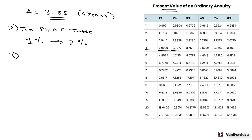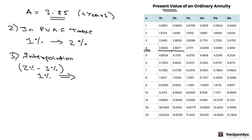The third step is to use interpolation. For interpolation, the difference in the discount rate is 2% minus 1%, which is 1%. The corresponding difference in the annuity factor is 3.9020 minus 3.8077, which equals 0.0943.